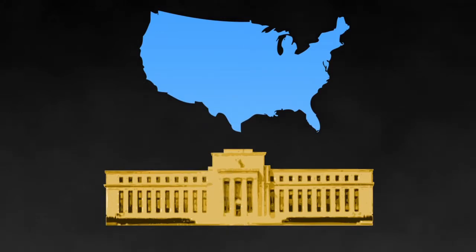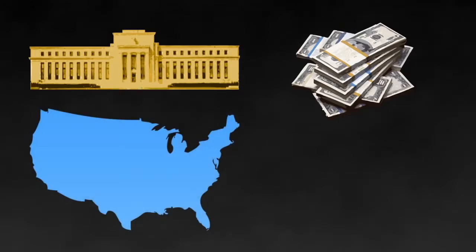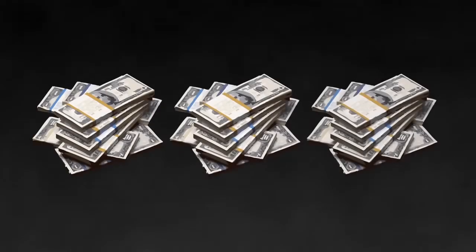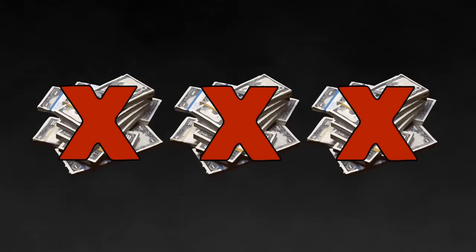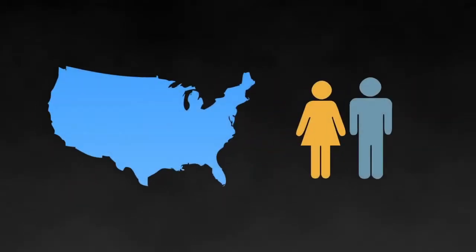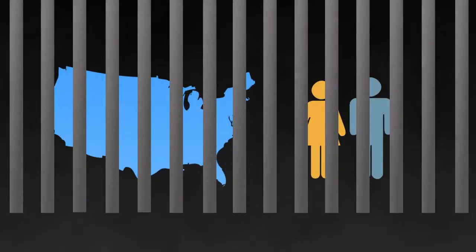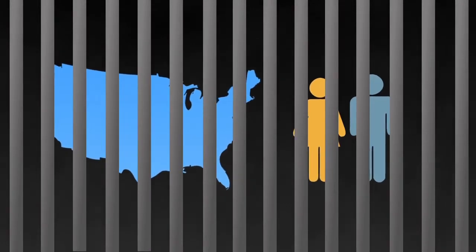So to clarify: the Fed creates money from nothing, loans that money to the U.S., and then charges interest on that money. What this means is that there is never and will never be enough money in circulation or in existence to pay back that debt. We as a country, as well as private citizens, are forever enslaved by debt with no way of ever paying it off.